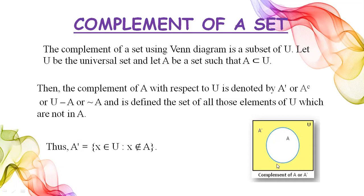This is a general representation of the complement of a set using a Venn diagram. The rectangular box shows the universal set, the circle shows set A, and the shaded area shows the complement of A.